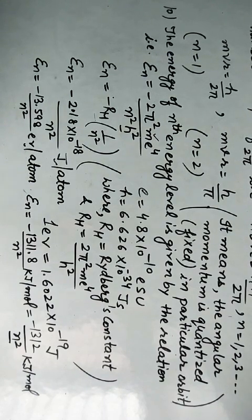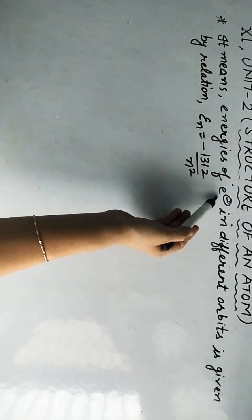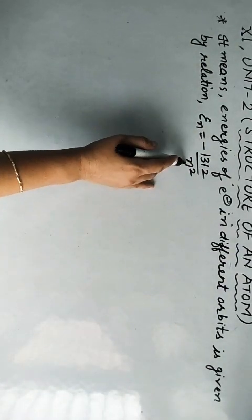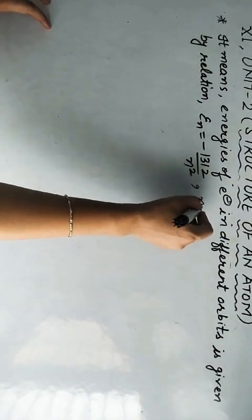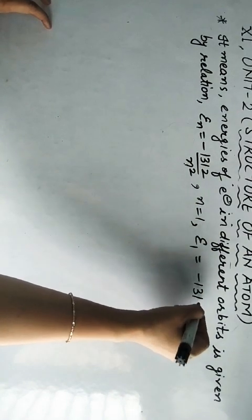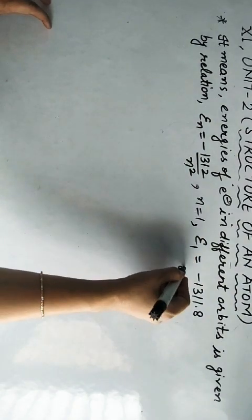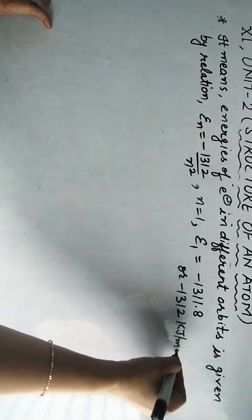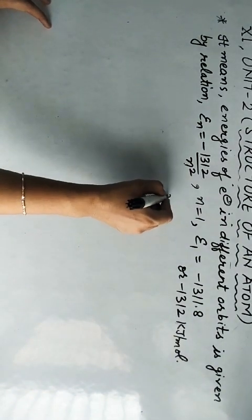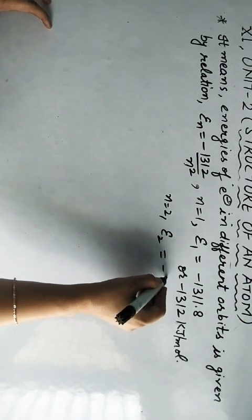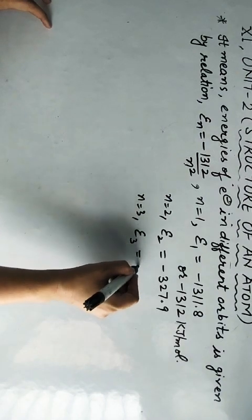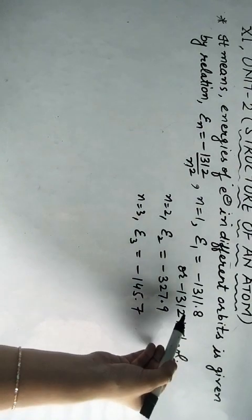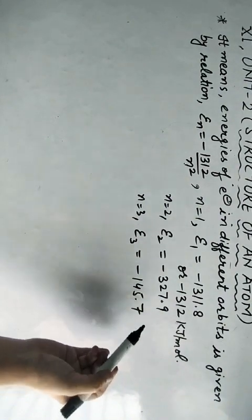N is also called the principal quantum number, which we will discuss later in this unit. So the energies of electrons in different orbits can be given by this simple formula, with N = 1, 2, 3. For N = 1 (first shell), the energy equals −1312 kJ/mol; for N = 2 (second shell), it is −328 kJ/mol; for N = 3 (third shell), it is approximately −146 kJ/mol.